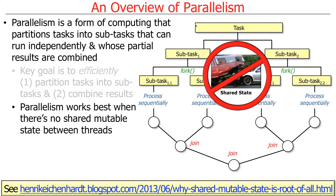Parallelism works best when there's no shared mutable state between threads. If the cores running in parallel are sharing state that can be changed, we have to make sure we protect those variables from parallel or concurrent access. There are ways to do that, but it works best if you don't have shared mutable state.